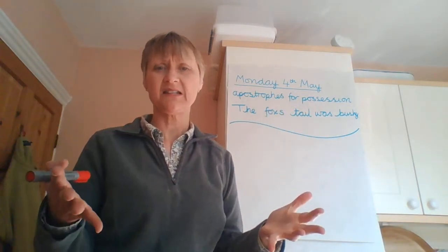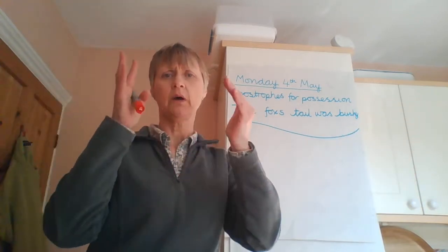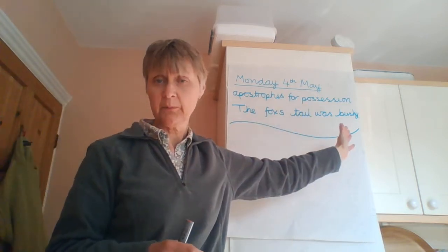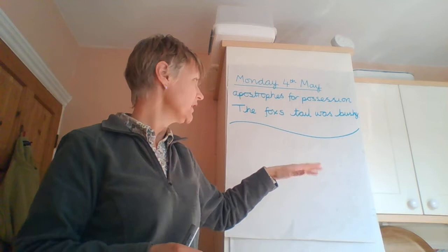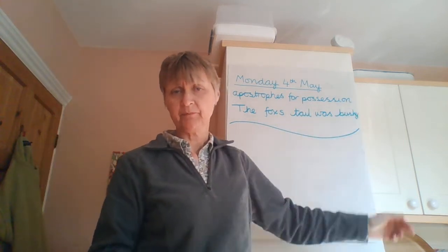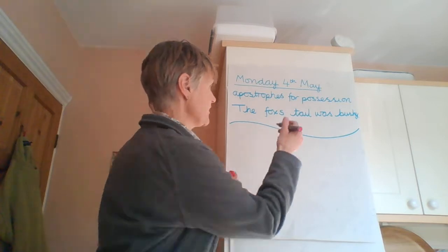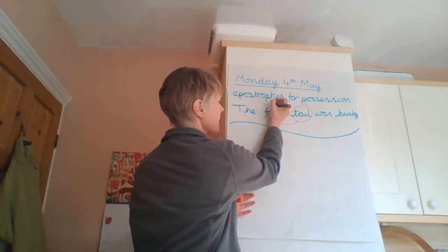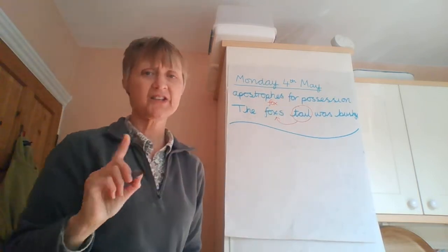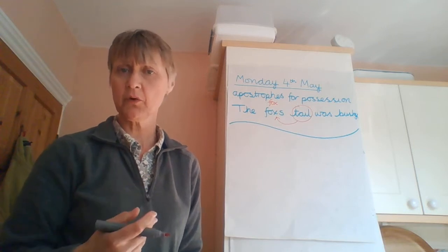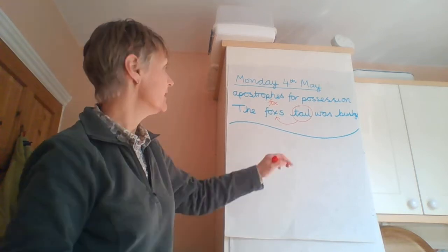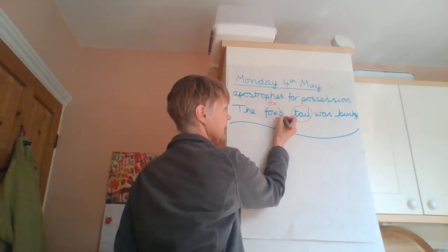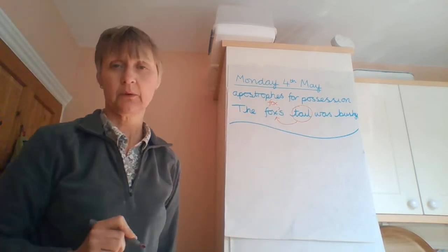So you are often given sentences, the long version, the tail belonging to the fox. And we make it shorter by saying the fox's tail. Put it in a sentence for you. The fox's tail was bushy. So we need to show that the tail belongs to the fox. The noun fox has no S on the end. And so we follow the rule of apostrophe S. We've already got the S. So we're following the rule of fox apostrophe S. The fox's tail. The fox's tail was bushy.